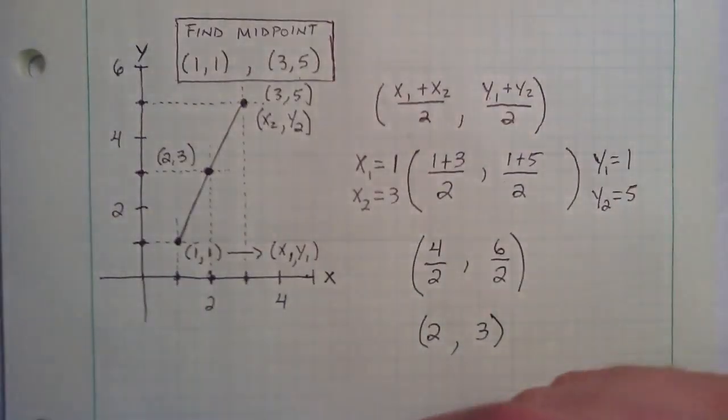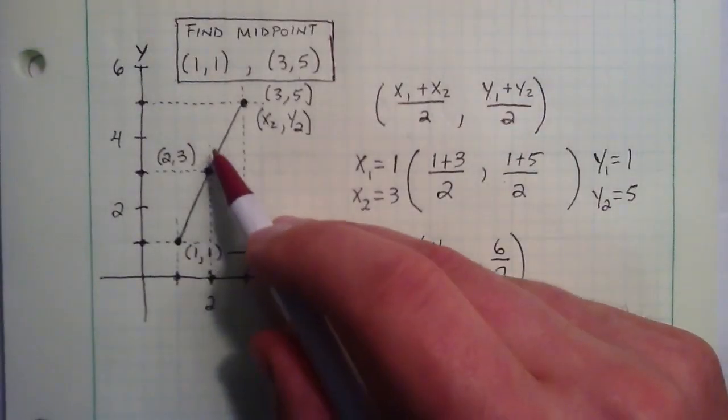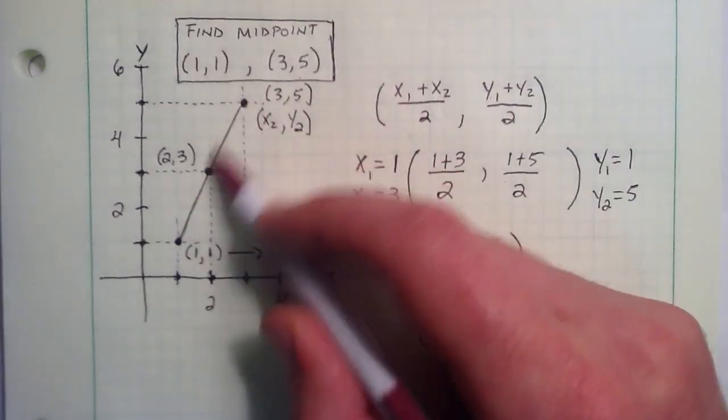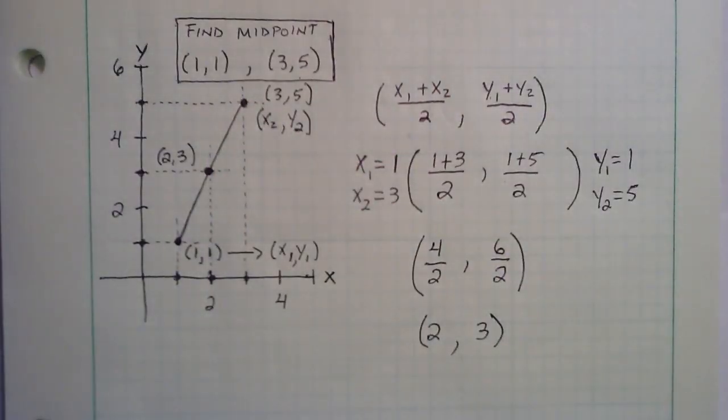And as you can see, it falls directly in the center of these two points, or in the center of this line segment. So there you go. That was an example on how to use the midpoint formula to find the midpoint of a line segment, or the midpoint of two points.